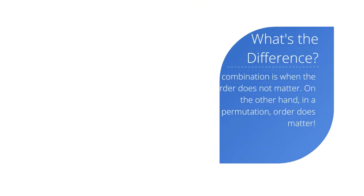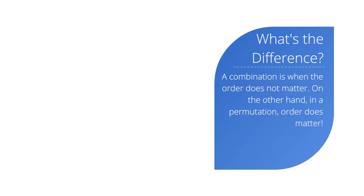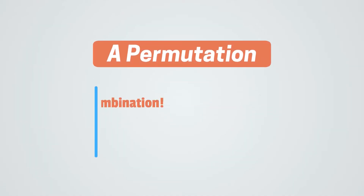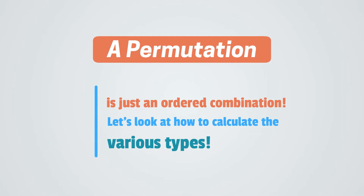What is the difference between a combination and a permutation? In a combination, the order does not matter. On the other hand, in a permutation, order does matter. A permutation is just an ordered combination.